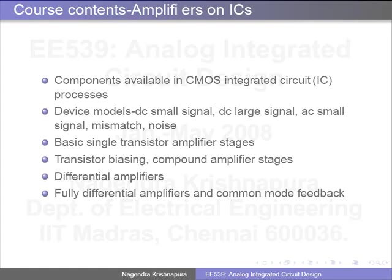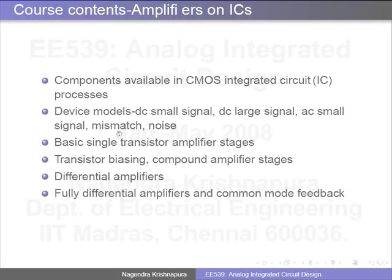Design of integrated circuits is done slightly differently than design of discrete amplifiers, mainly because of different kinds of components available and different trade-offs. For instance, on an IC it is perfectly okay to use 10 transistors in place of 1 if it makes your circuit better — in discrete design you would not do that. On ICs you could pick a 100-transistor circuit if it looks better and has smaller area. We will then go through all the components available in a general CMOS IC process, then through device models including DC small signal, AC small signal, random mismatch and noise models.